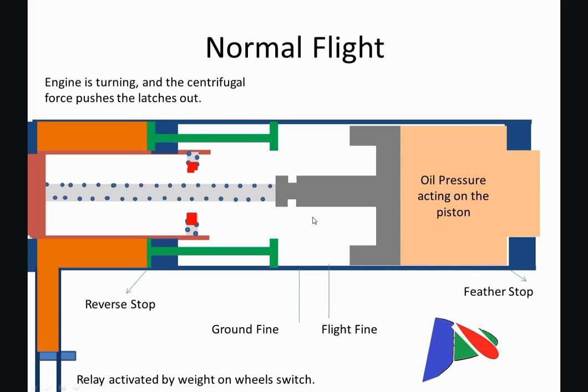And how do we do it? Well, we use flight fine pitch stops. In normal flight, the pilot has selected a blade angle, and the propeller takes up that blade angle, and we fly along.